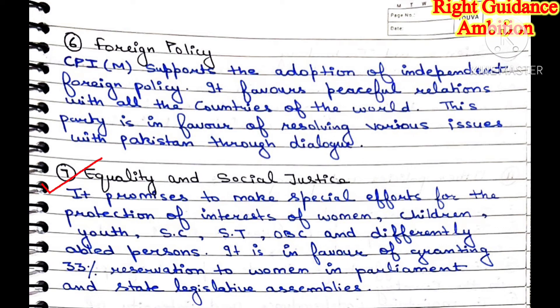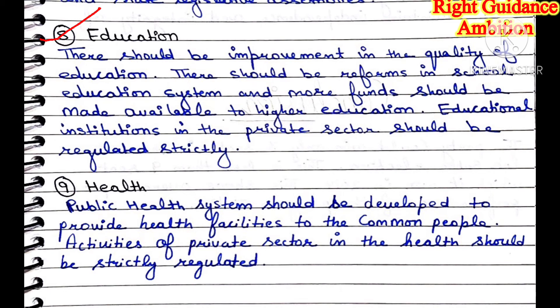The seventh point is equality and social justice. CPIM promises to make special efforts for the interests of women, children, youth, SC, ST, OBC and differently abled persons. They favour 33% reservation of seats in parliament and state assemblies. The eighth point is education. CPIM says the education system should improve in quality, school education should be reformed from backward and ancient policies, and more funds should be made available for higher education — for schools, colleges and students.